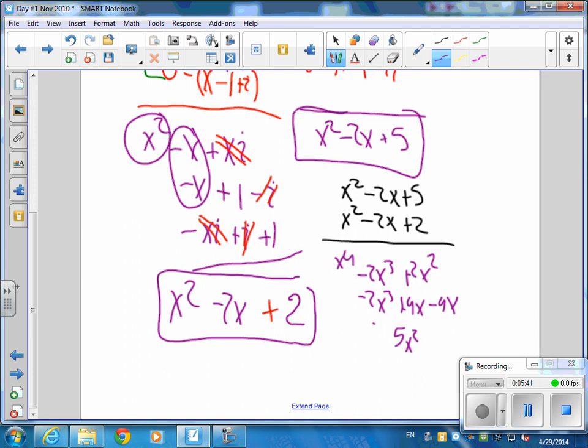And then it will be 5x squared. Did I miss an x somewhere? Did I miss an x somewhere? 2x cubed plus 4x squared. There we go.